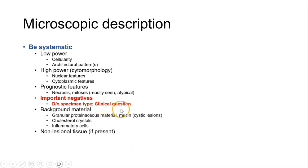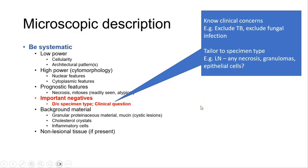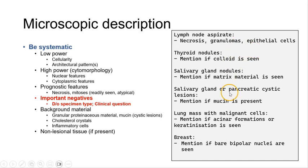Now we come to important negatives, and this really depends on knowing the clinical question. For example, in the context of a lymph node, the top differentials would include a reactive lymph node, specific infections, or malignancy — more commonly metastatic malignancy. Hence, some of the standard negatives I include would be necrosis, granulomas, and epithelial cells. If they are not present, I will say that they are not seen.